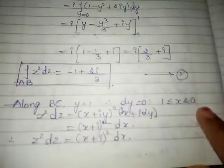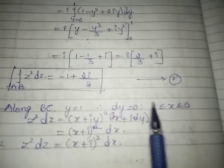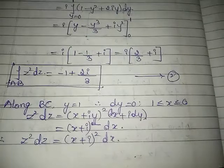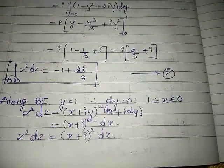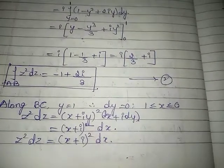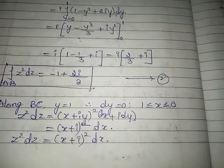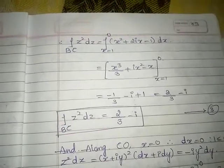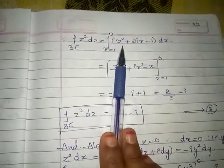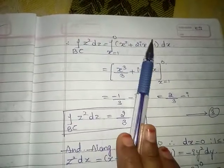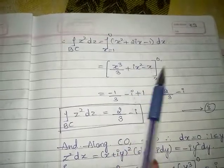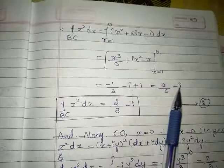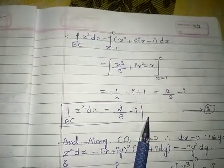Along BC, y = 1, therefore dy = 0, and x lies between 1 and 0. So z² dz = (x + i)² dx. Expanding and integrating from 1 to 0 of (x² + 2ix - 1) dx, we substitute limits and get the value 2/3 - i. Name this equation 3.